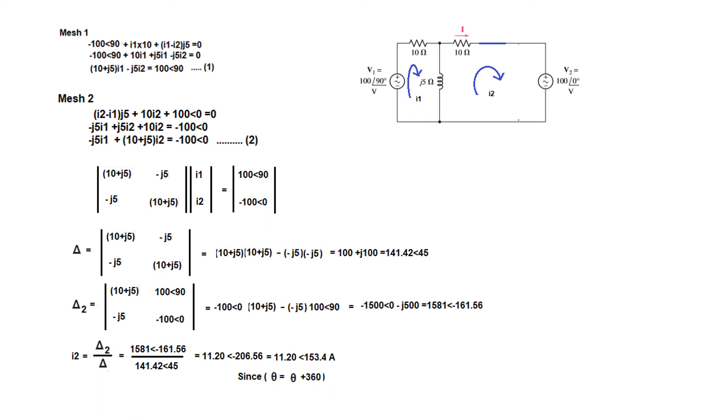And so I2 is given by delta 2 over delta. So we write the values: this one for delta 2 divided by delta. And so current is 11.20∠-206.6°. Now, in my calculator it came to be minus 206. It is better to write it positive, so we can just add 360 with any angle, and so by adding 360 we have got angle 153.4° ampere, since theta can be written as theta plus 360.